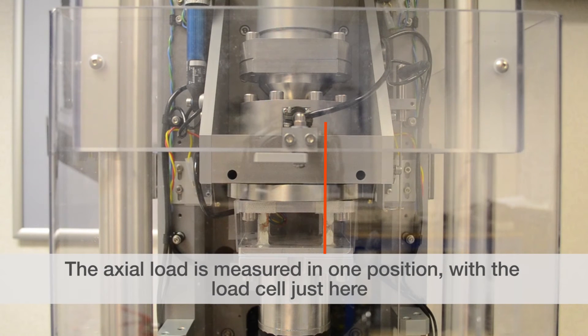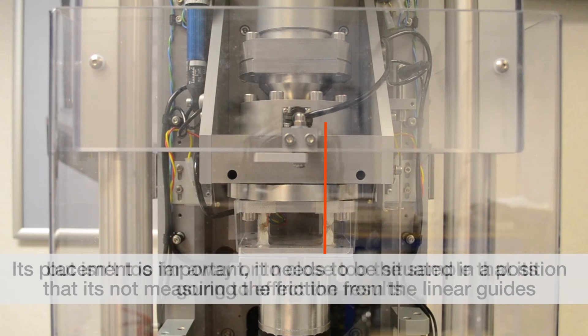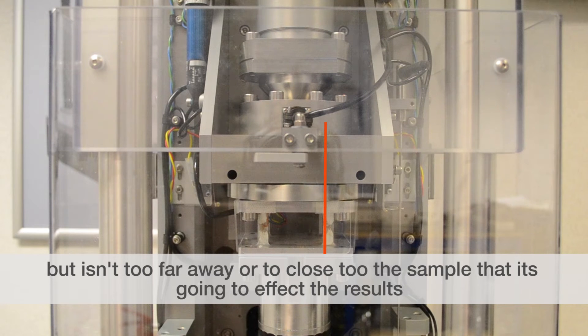The axial load is measured in one position, with this load cell just here. You can see the cable coming out the front of it. Its placement is very important. It needs to be situated in a position that isn't measuring all of the friction from the linear guides, but isn't too far away or too close to the sample that it's going to affect the results.